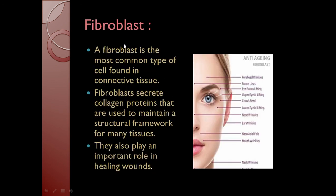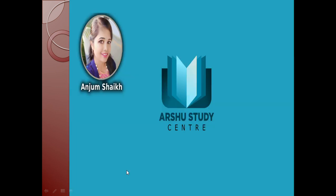The fibroblast is the most common type of cell found in connective tissue. Fibroblasts secrete collagen proteins that are used to maintain the structural framework for many tissues. They also play an important role in the healing of wounds. In the next video we will study about another special connective tissue known as blood. Thank you.